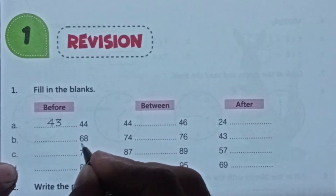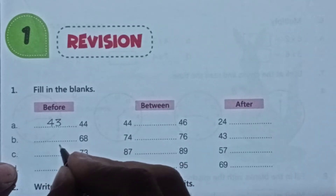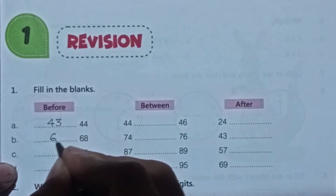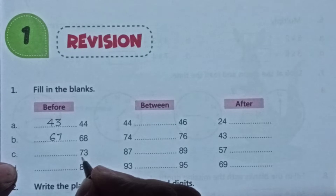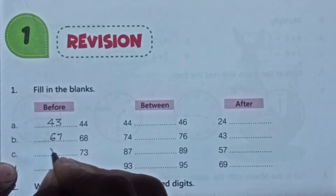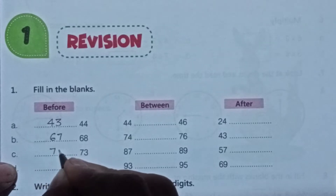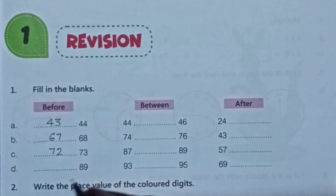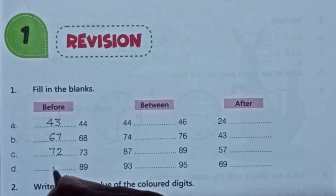Next is 68 — before 68 comes 67. Then 73 — just before 73 comes 72. And 89 — just before 89 comes 88.